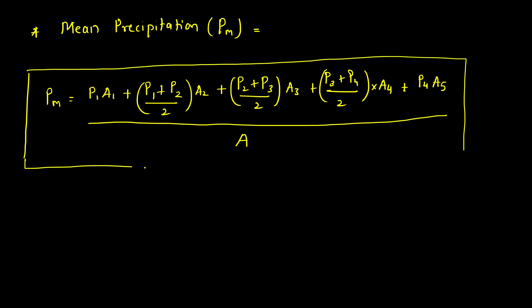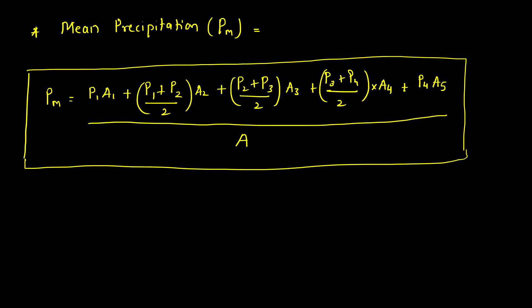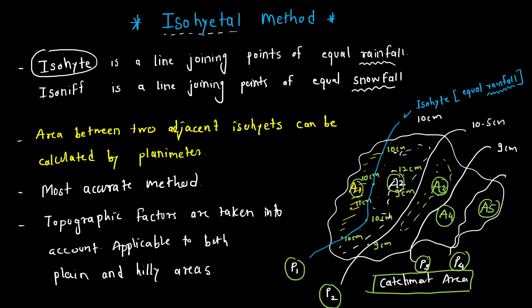Note that this formula is derived for four isohyets. If a different number of isohyets is given, you modify the equation accordingly. Once you solve numerical problems, you will get more clarity about this.